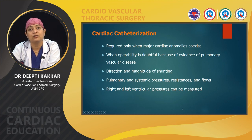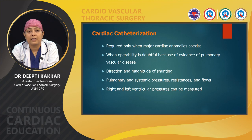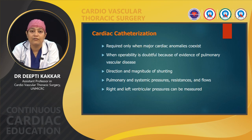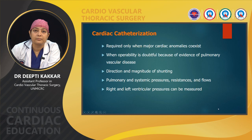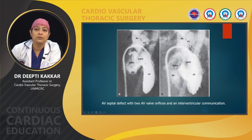Cardiac catheterization is usually required only when major co-anomalies coexist or when operability is doubtful due to evidence of pulmonary vascular disease. Cardiac cath helps in defining the direction and magnitude of shunting, detecting exact pulmonary artery and systemic artery pressure, resistance and flows, and measuring right and left ventricular pressures and pulmonary vasculature reactivity. This cineangiogram shows the AVCD with two different AV valve orifices — the right AV valve orifice, the left AV valve orifice, the interventricular communication between them — and also demonstrates the characteristic goose neck deformity.